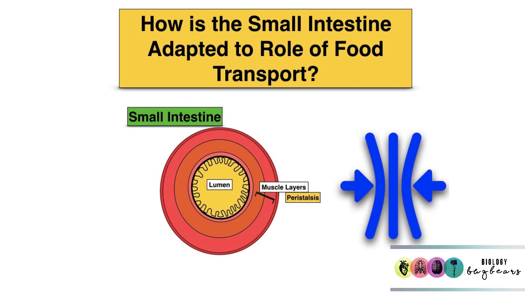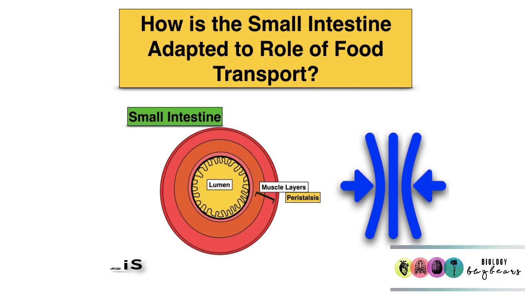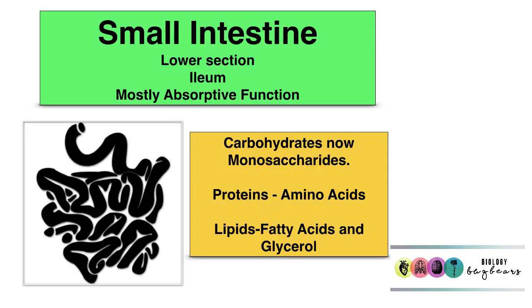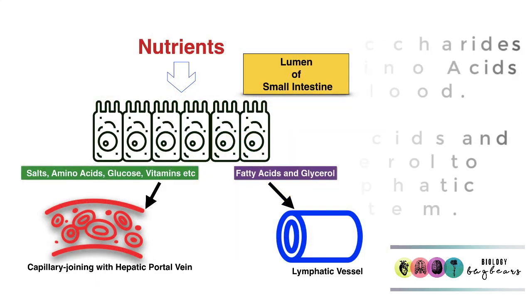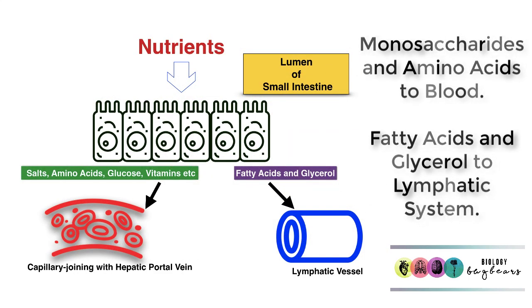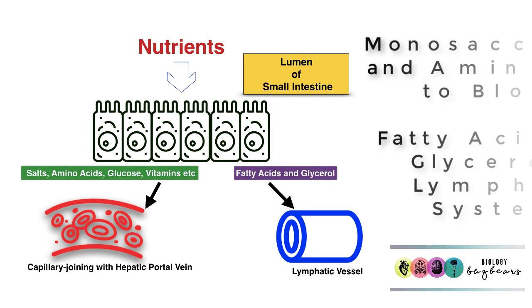It's important not to forget the role of peristalsis — the muscular contraction of the intestinal walls — in moving food onwards through the digestive system. In the lower section of the small intestine, known as the ileum, absorption takes place. All of the monosaccharides, amino acids, fatty acids, and glycerol leave the small intestine. The amino acids and monosaccharides pass into the bloodstream, while the fatty acids and glycerol pass into the lymphatic system first.